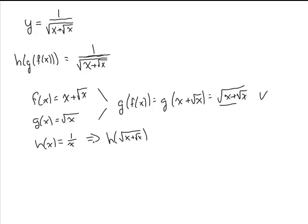h says we take 1 over whatever the input is. So there's our 1 over square root of x plus rad x. And we've got our functions.